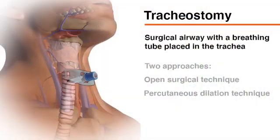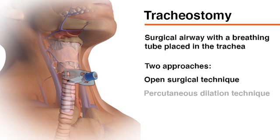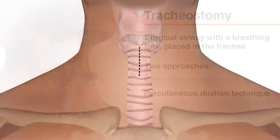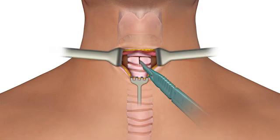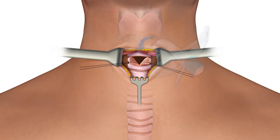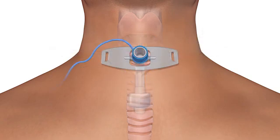A tracheostomy is a surgically created airway that is kept open with a breathing tube or tracheostomy tube. The tube is inserted directly into the trachea through an incision in the neck. A tracheostomy can be created with the use of an open surgical technique or a percutaneous dilation technique and can take place in the operating room or at the patient's bedside. The open technique involves dissection of the anterior pre-tracheal tissue and insertion of a tracheostomy tube into the trachea under direct visualization.